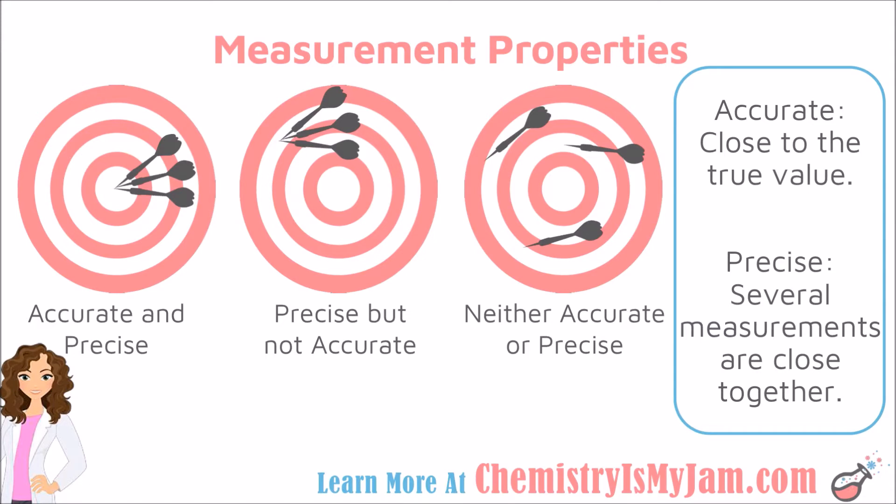Let's begin with accuracy. Accuracy means that your measurement is close to the true value. In terms of a dartboard, an accurate throw is one that hits the bullseye.